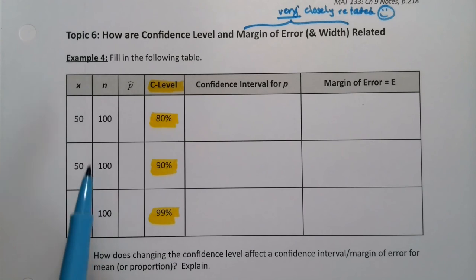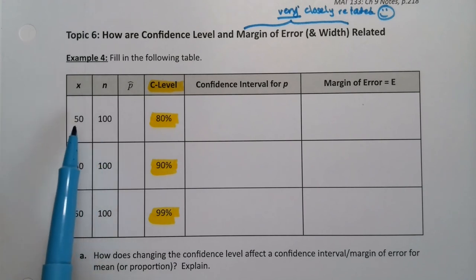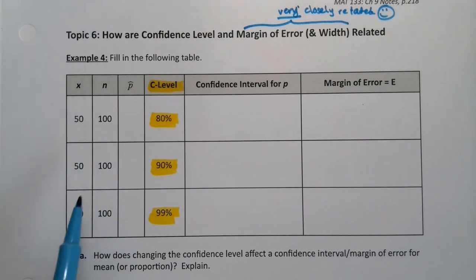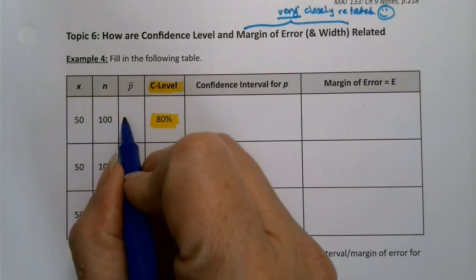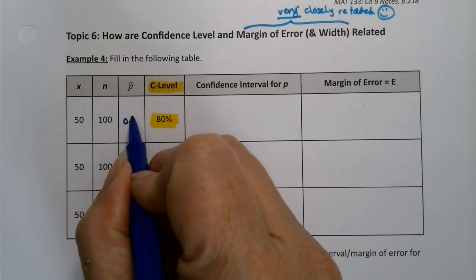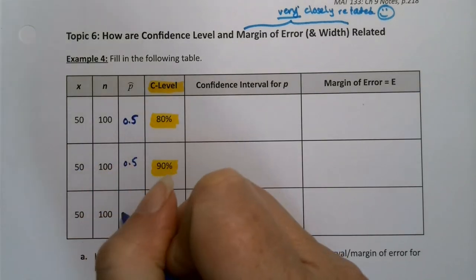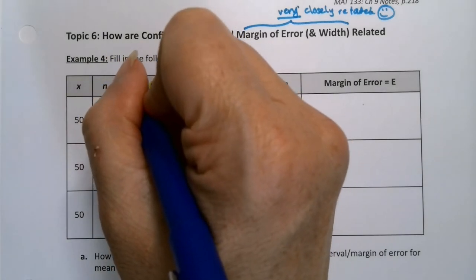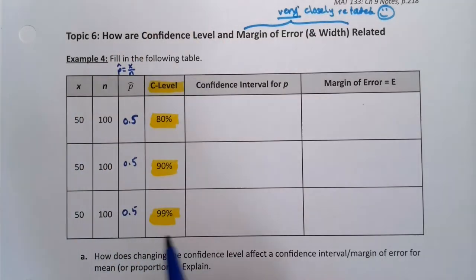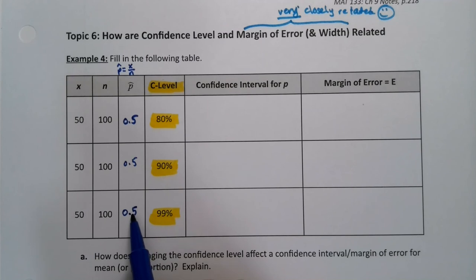Looking at these problems, they all have 50 and 100 — 50 and 100. For our table. So that would mean that I have 0.5 here for every P-hat. Remember the formula: P-hat is X divided by N. And that's easy enough to see — 50 divided by 100 is 0.5.